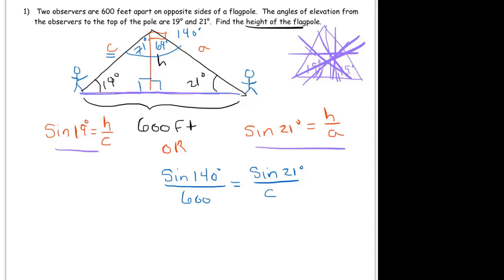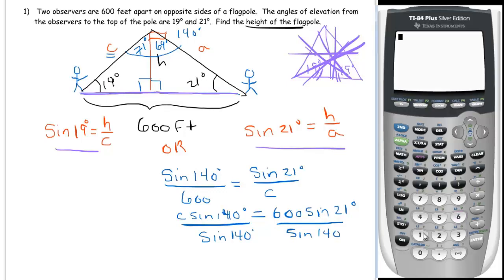So let's cross-multiply and solve. We put this in our calculator. And we get C to equal 334.513 feet.